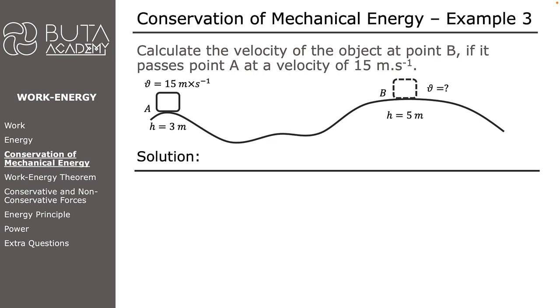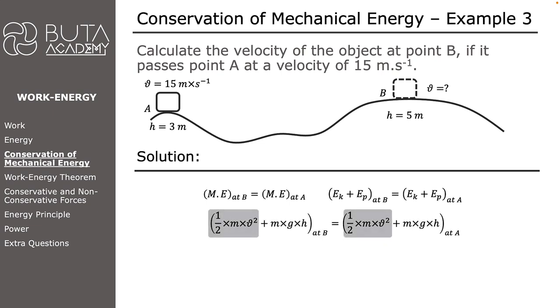As we know, mechanical energy at point A equals mechanical energy at point B. Mechanical energy is the sum of potential and kinetic energies. Kinetic energy is defined as 1 over 2 times M times V squared. Potential energy is defined as M times G times H.